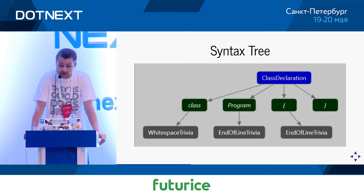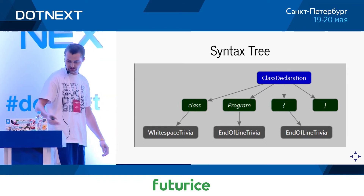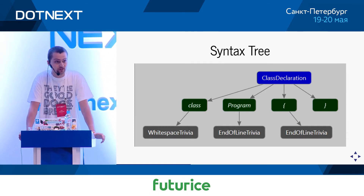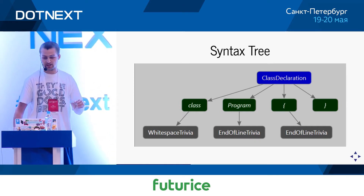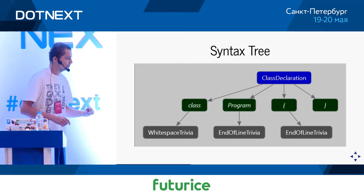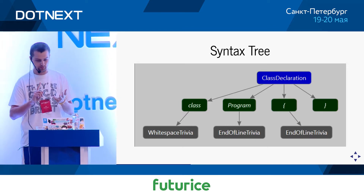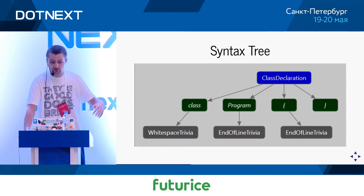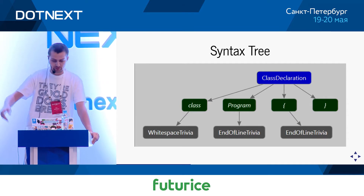Inside a syntax node you can find tokens — syntax tokens are the second level. These are things that cannot be broken down into smaller pieces: keywords in the language, identifiers like the name of our class, punctuation, braces or brackets. Syntax tokens in Roslyn are value types for performance reasons. Finally we have trivia — syntax trivia is basically all the non-important things from the compiler's perspective, like comments, white space, end of lines, and preprocessor directives. Those are also value types in Roslyn.